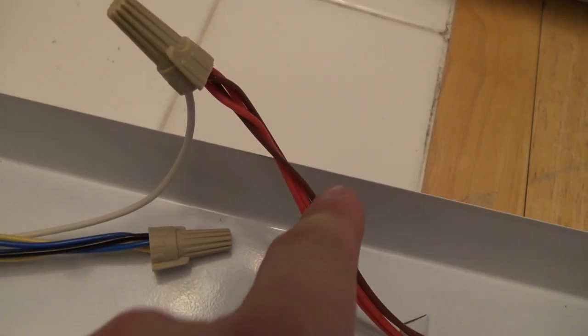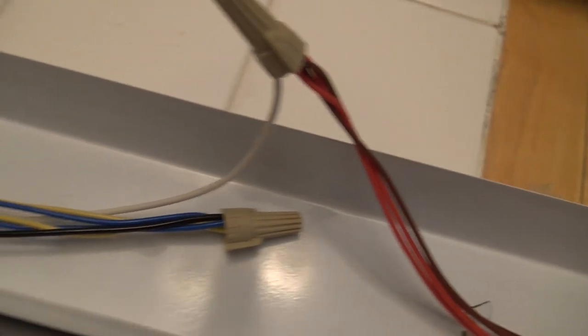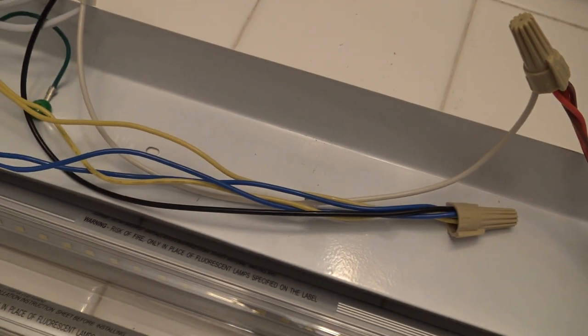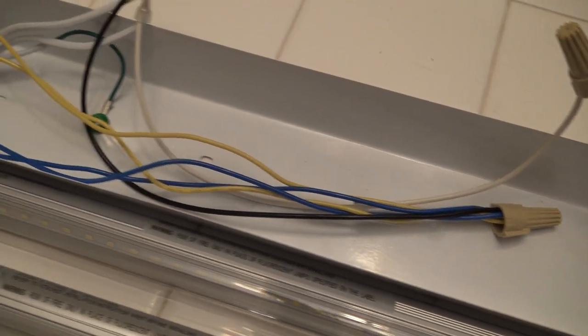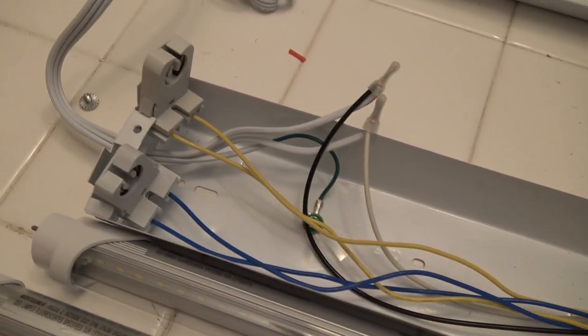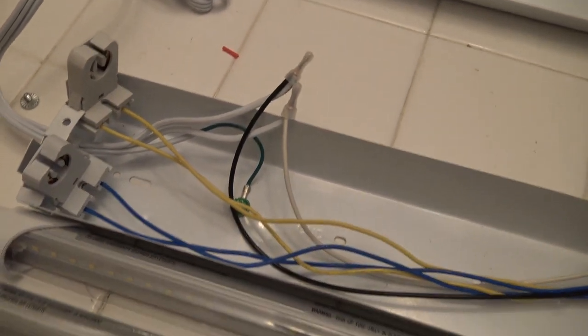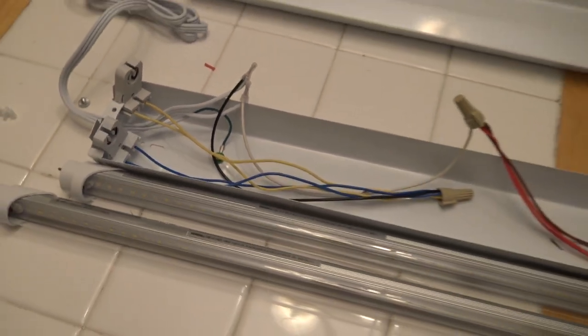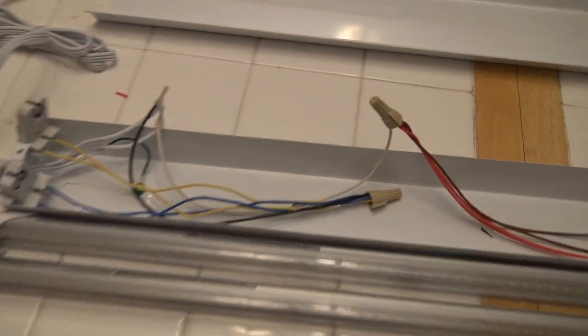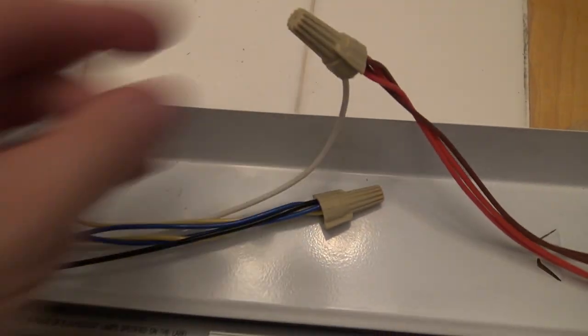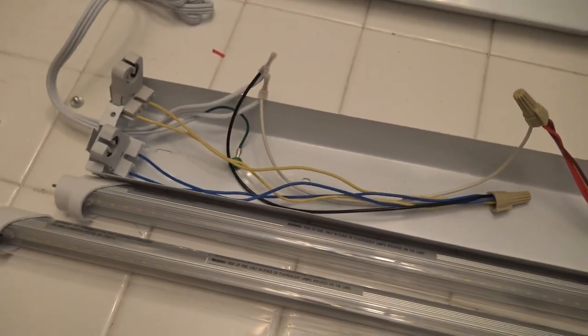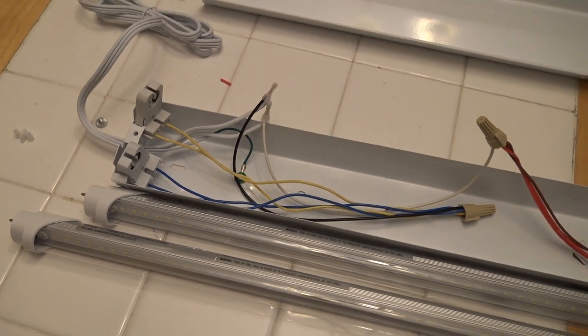And those are all wire nutted to the white. Again, it doesn't matter what color all of the wires from the tombstones are. All that matters is in this two-sided bulb that we're sending the load to one side of the tombstones and the neutral to the other side of the tombstones. So once we've confirmed that all looks good and these wire nuts are nice and snug, let's cover this fixture back up.